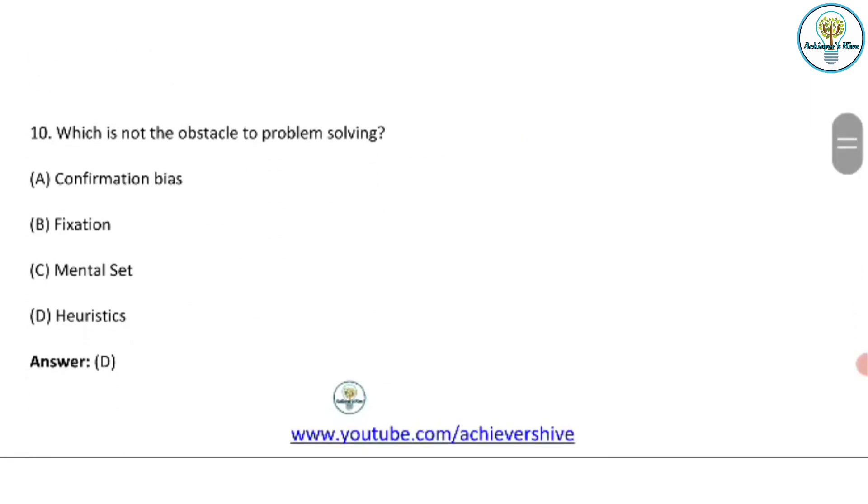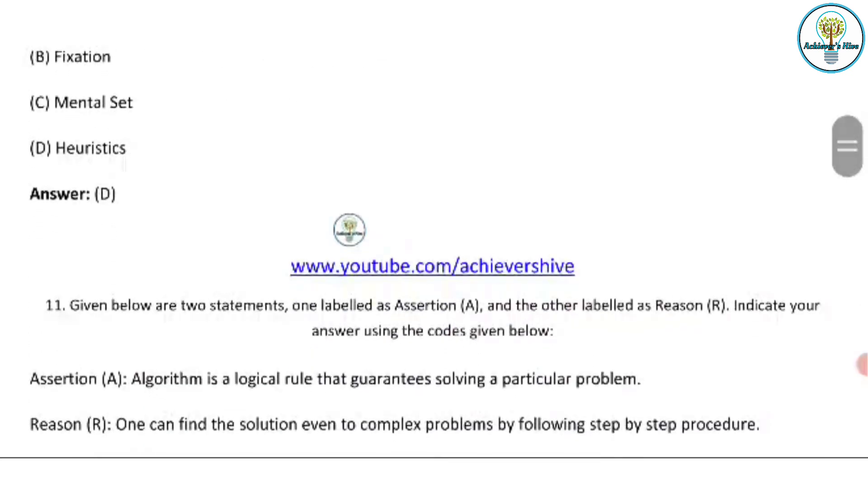Moving on to the next question. Which is not the obstacle to problem solving? We have heuristics. Heuristics shows that there is no obstacle to the problem solving. Rest of the things - confirmation bias. Bias is always cognitive thinking, is associated with the cognitive part. So definitely bias has to, you know, create problems in problem solving. Fixation will also do. Fixation is one kind of a defense mechanism. Mental set also, and heuristic does not have to anything with this. So option D is the correct answer.